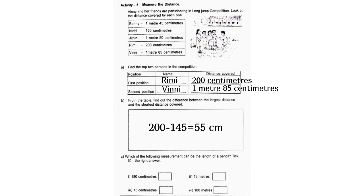B. From the table, find the difference between the largest distance and the shortest distance covered. 200 - 145 = 55 cm. C. Which of the following measurements can be the length of a pencil? Tick the right one. Answer: option 3, 18 cm.